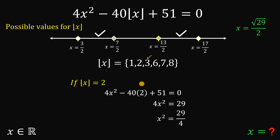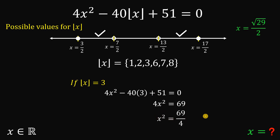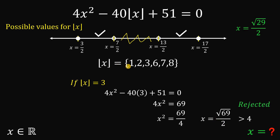Third case: the floor value of x equals 3. The equation gives 4x squared minus 40 times 3 plus 51 equals 0. Simplifying, 4x squared equals 69, so x equals square root of 69 over 2. Since the square root of 64 is 8, the square root of 69 is slightly above 8, so this value is greater than 4 but less than 5. This number falls outside our valid regions (1.5 to 3.5 and 6.5 to 8.5), so this value is rejected.